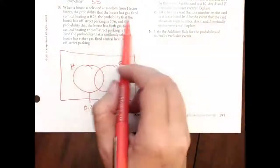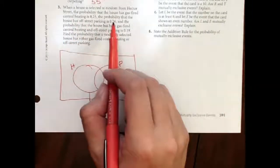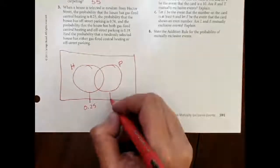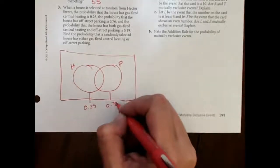Then it tells me the probability that it has parking is 0.78. Again, that's the whole circle. It doesn't go here. It's the whole circle, 0.78.